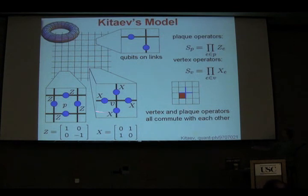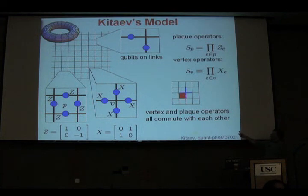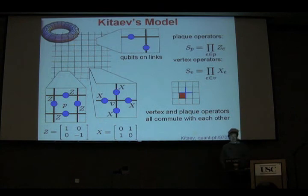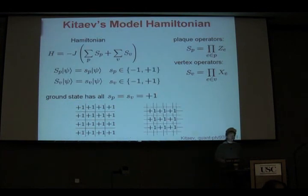The interesting thing about all these operators is that they all commute with each other. Plaquette operators commute with plaquette operators because they only contain Z terms. But also, most interestingly, the vertex and plaquette operators commute with each other. Where a plaquette operator and a vertex operator overlap, they overlap in two places — two qubits — and since ZZ commutes with XX, these operators commute. These are going to be the stabilizer generators for a particular type of code.